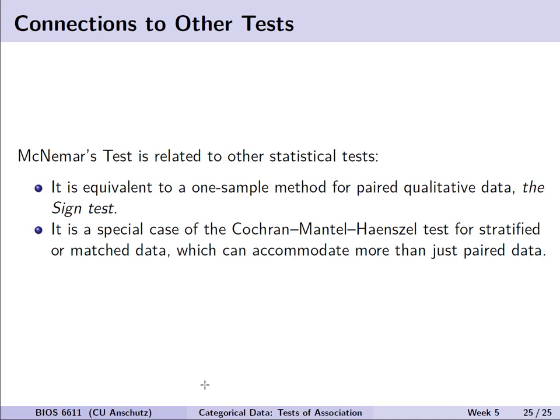To close, McNemar's test is equivalent to a one-sample method for paired qualitative data known as the sign test. It's also useful to note that McNemar's test is a special case of the Cochran-Mantel-Haenszel test for stratified or matched data, which can generalize to more than a 2x2 table — useful when we have multiple potential groups to consider. With that, we'll wrap up our discussion of categorical data analysis and 2x2 tables and move forward next week to nonparametric methods and bootstrap approaches.